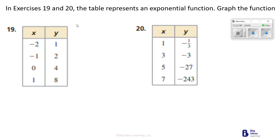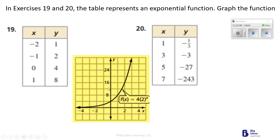Now it says in exercise 19 and 20, the table represents an exponential function — graph the function. When x is negative 2, y will be 1. When x is negative 1, y will be 2. When x is 0, y will be 4. And when x is 1, y will be 8. This is definitely exponential because we're multiplying everything by 2. When we graph this, we get a curve like this.